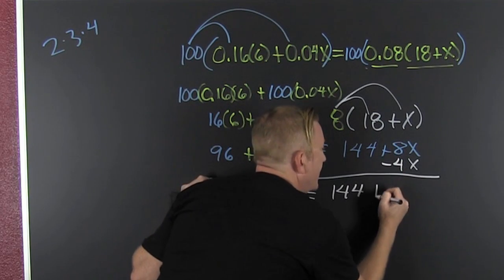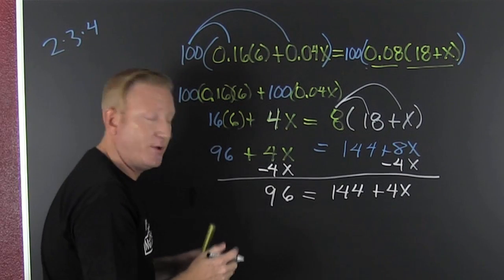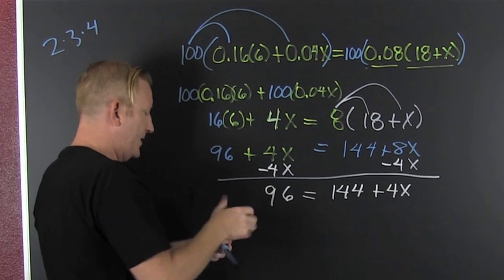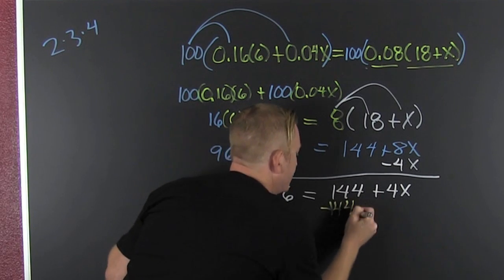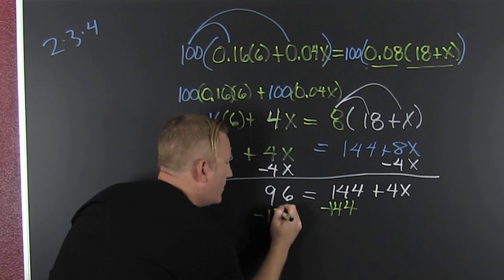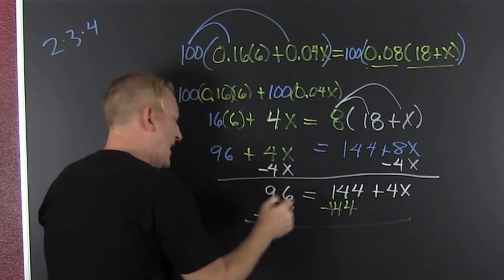And then I combine my like terms, that's a plus 4x. Now I'm gonna go ahead and I'm gonna subtract off that 144, and I do that now. I subtract the 144 from both sides. What you do to one side, you must also do to the other. Okay, and then left over on this left side...